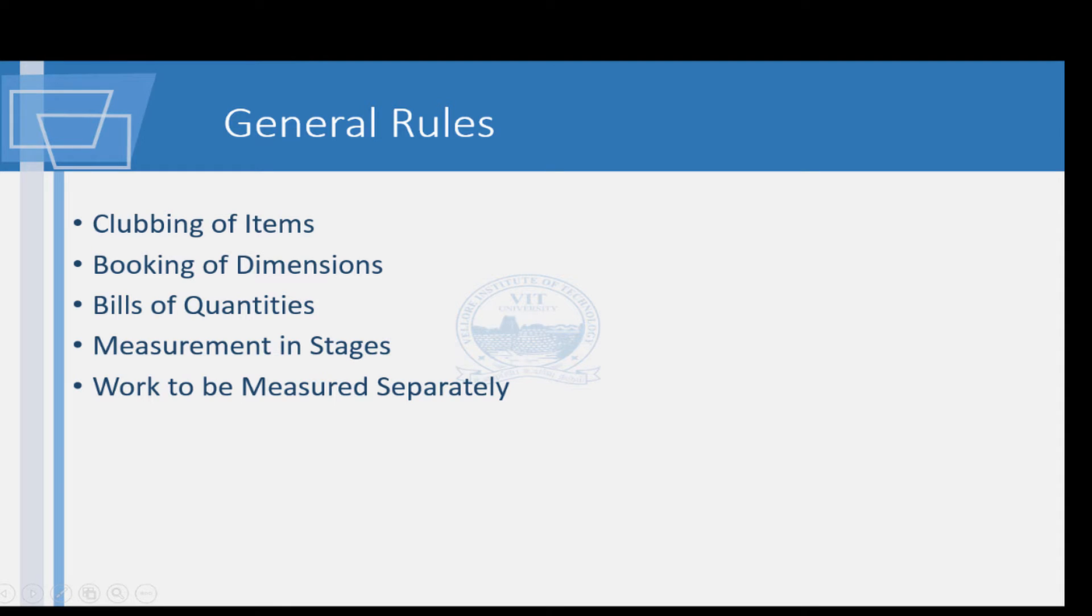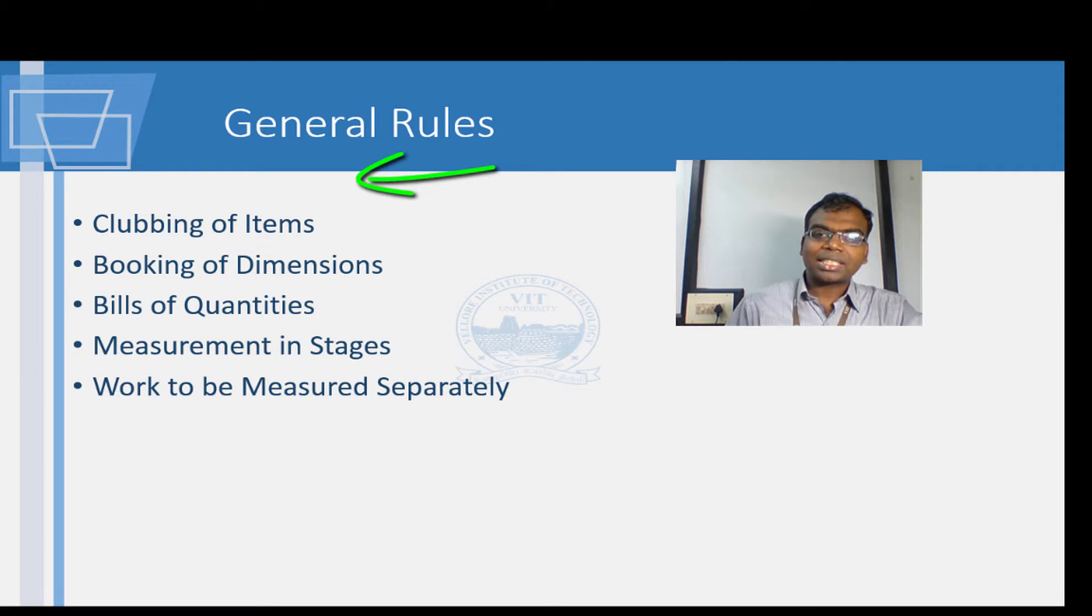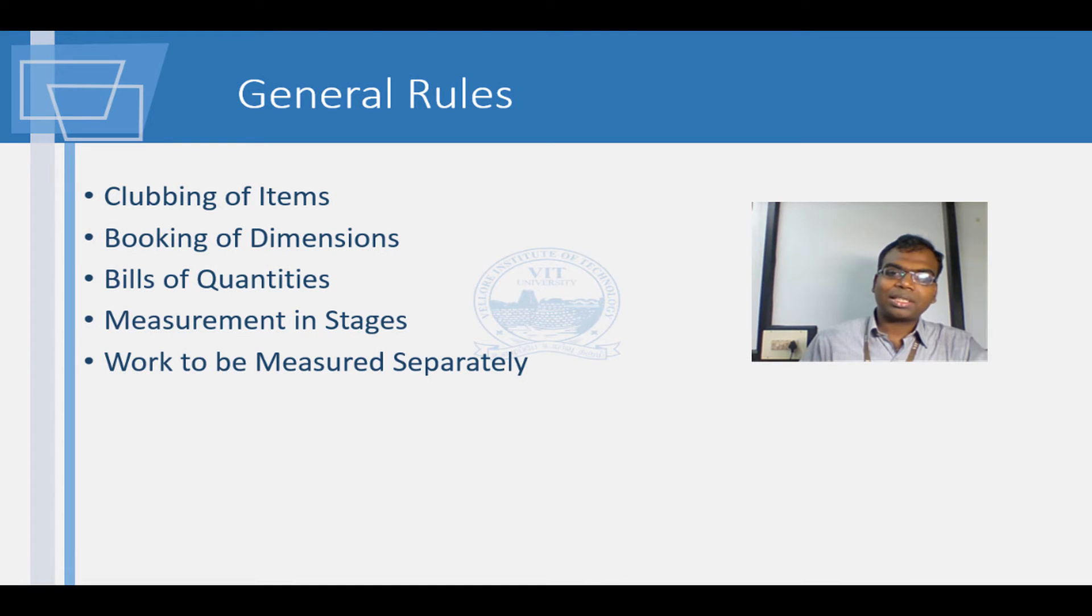Subsection 1c deals with provisions common to all parts of SP27. Items sharing the same description can be clubbed together. When description is the same, it indicates that the cost involved to do the task is the same. On a practical note, projects are divided by WBS or work breakdown structures. In such cases, the clubbing of items should also be under the correct WBS.